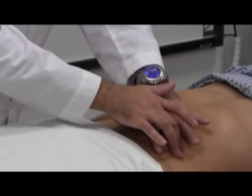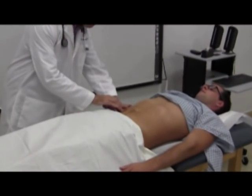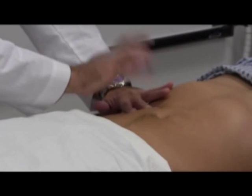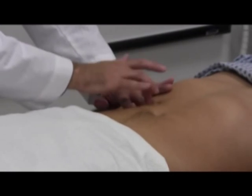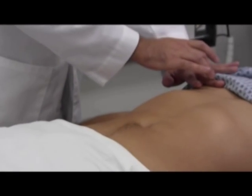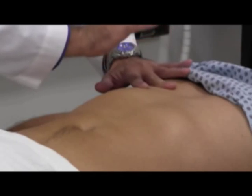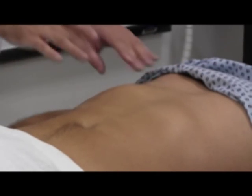Then proceed to percussion of the liver span. Measure the vertical span of liver dullness in the right midclavicular line. Start at a level below the umbilicus in the right lower quadrant and percuss upwards toward the liver. Identify the lower border of dullness. Next, identify the upper border of liver dullness. Starting at the nipple line, lightly percuss from lung resonance down toward liver dullness. The liver span normally should be between 6 and 12 centimeters in the right midclavicular line.